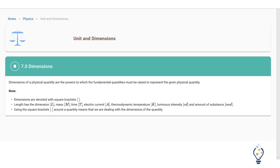In this video lecture, we will study about dimensions. Dimensions of a physical quantity are the powers to which the fundamental quantity must be raised to represent the given physical quantity. In simple words, dimension is a method of representing any physical quantity in terms of fundamental quantities. Dimensions are denoted by square brackets.